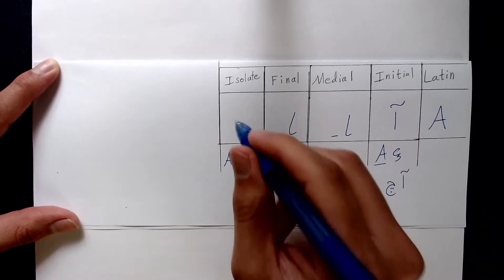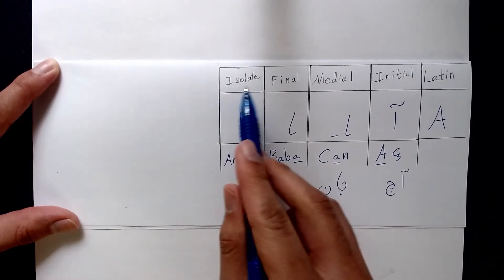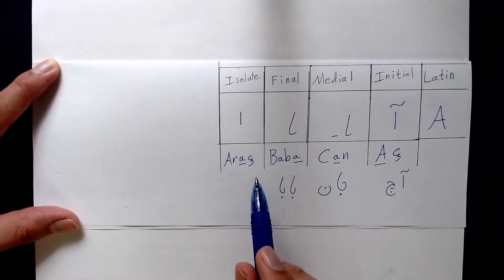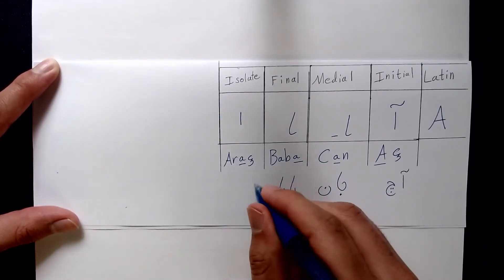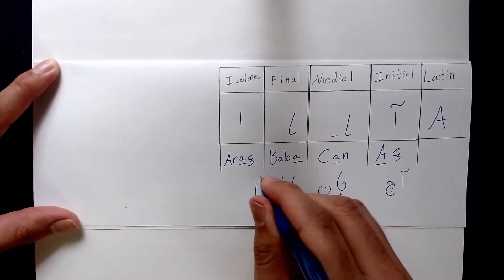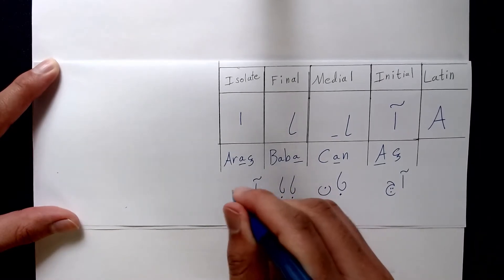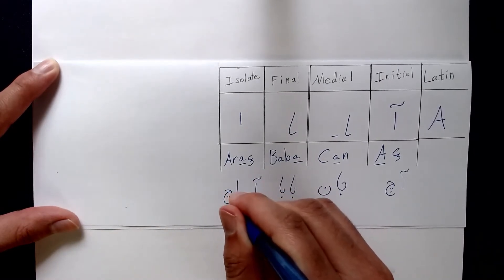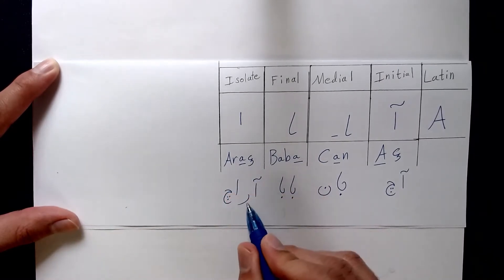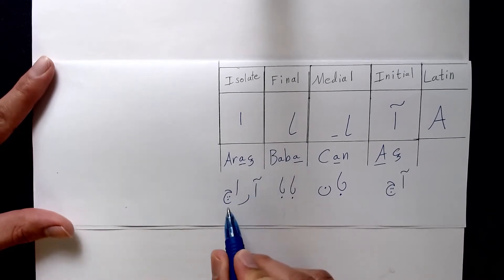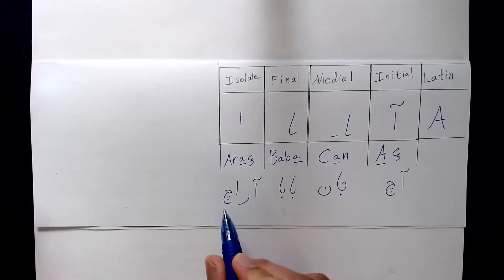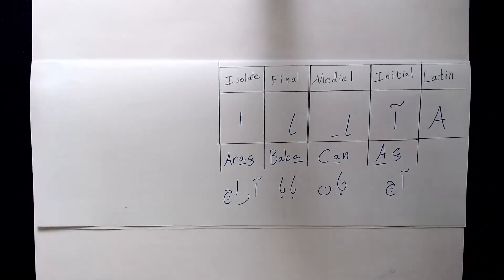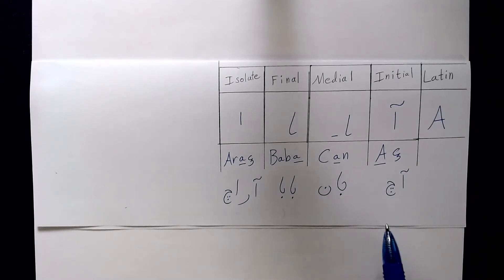And in the word Araç, we can see that Elif is in its isolated form — we would write Araç accordingly. This is because the Re is not connecting to the Elif, which does not connect to Chim. This is one of the more intuitive vowels.